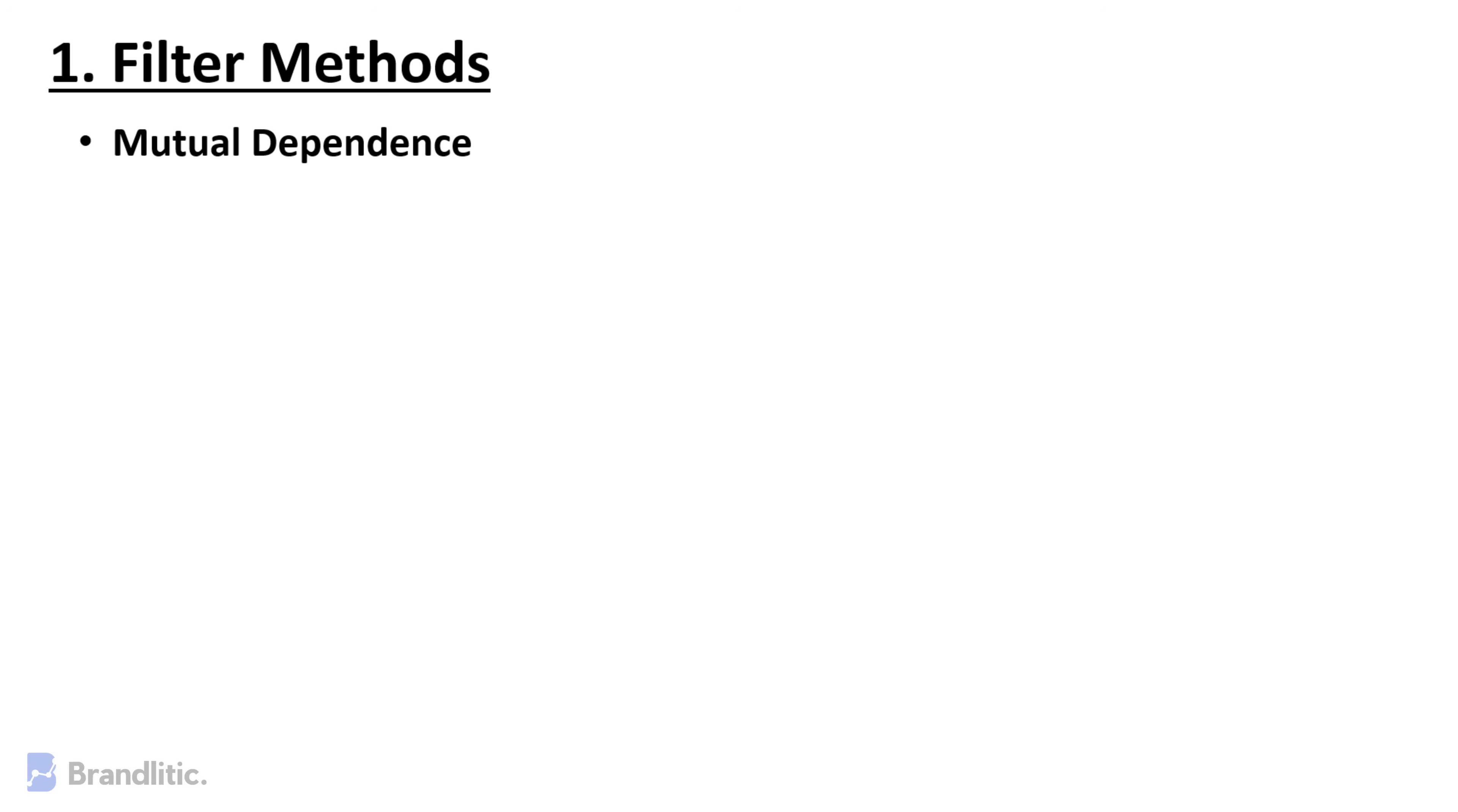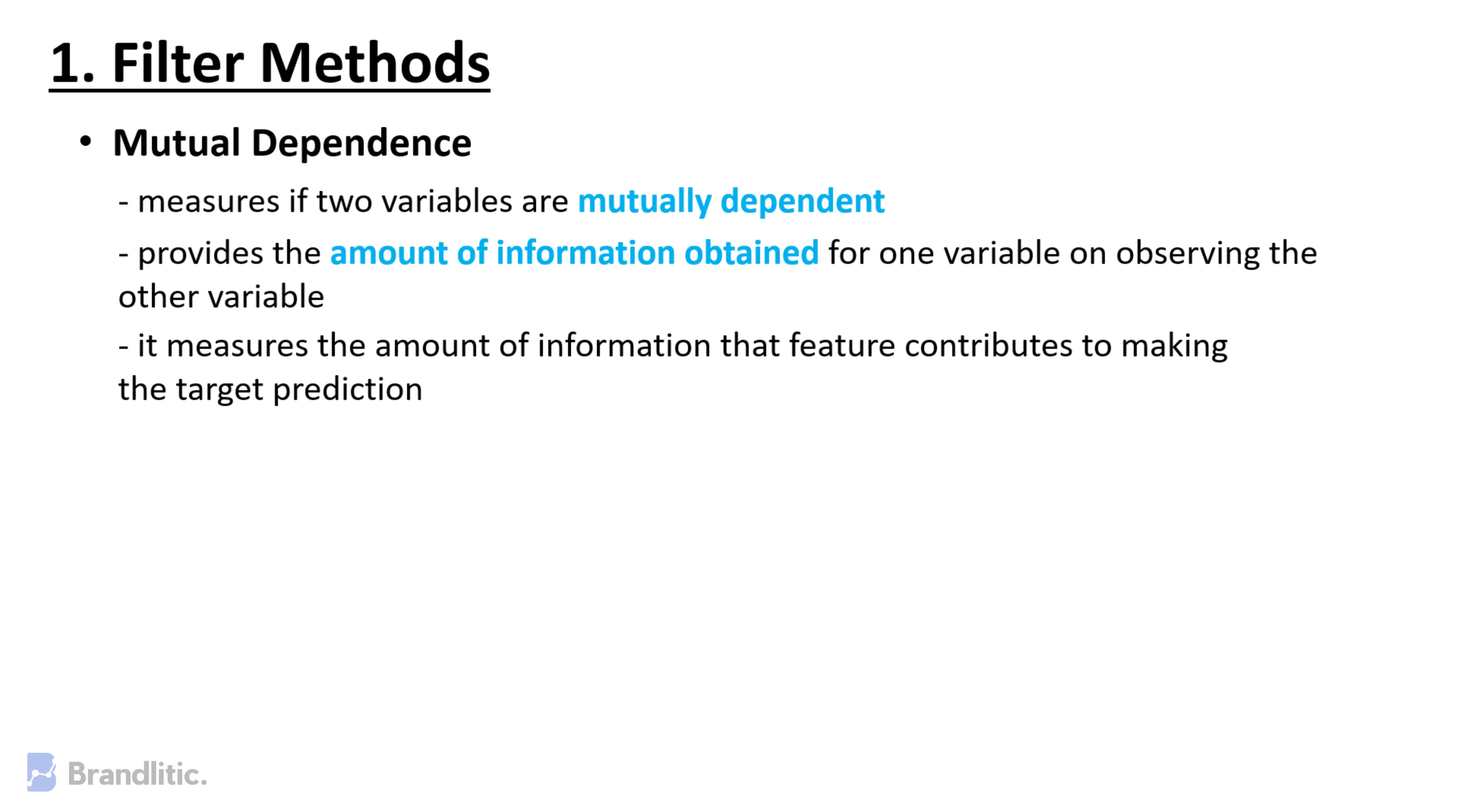Mutual Dependence. This method measures if two variables are mutually dependent and thus provides the amount of information obtained for one variable on observing the other variable. Depending on presence or absence of a feature, it measures the amount of information that a particular feature contributes towards making the target prediction.